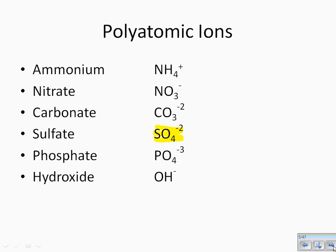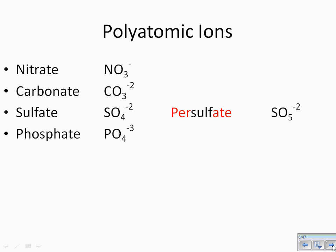When we looked in the last video, we took one oxygen out, and when we did that, the name changed from sulfate to sulfite. But what happens if we add one more oxygen? If we add one more oxygen, all we're going to do is add the prefix 'per' onto the name of the polyatomic. The charge stays the same, but now we're going to add 'per' in front.